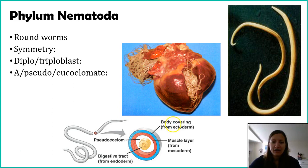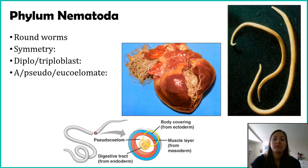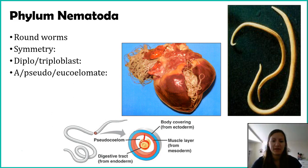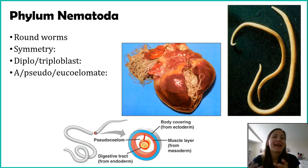In the diagram, the endoderm is shown in yellow, the ectoderm in blue, and the pinkish layer is the mesoderm. But the mesoderm is not lining the endoderm. In a true coelom — a eucoelomate — we would see the mesoderm lining everything. But we don't. The digestive system is almost loose inside the body; it's not anchored by the mesoderm. This is what we refer to as a pseudocoelom.